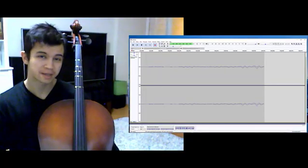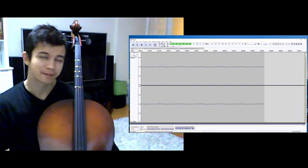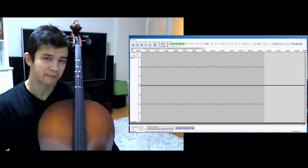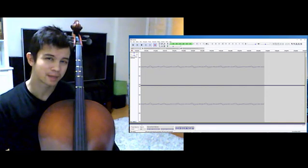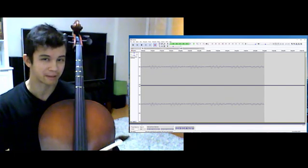The cello is another string instrument. It is roughly five times bigger than the violin. It produces much lower sounds, thus we would expect its waveforms to look a little bit different. Listening to it now, can you notice any differences between the waves it produces versus the violin we heard previously?